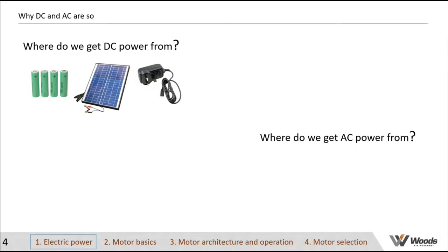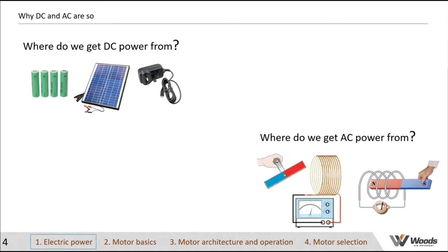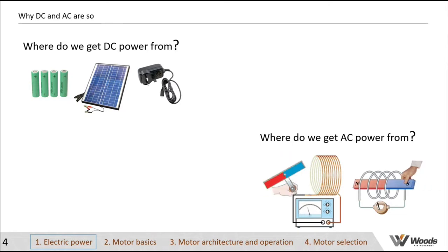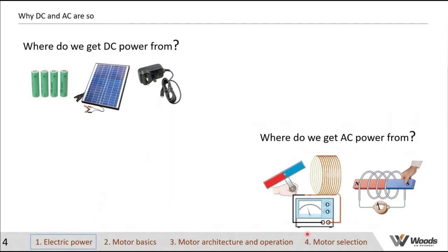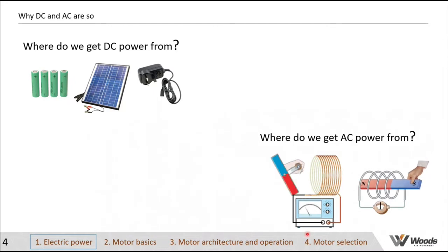Moving on to AC current — in its raw form we tend to get it from a moving magnetic field in a coil of wire. You can move the field linearly or rotate it. Rotating a magnetic field or moving it in and out of a coil of wire essentially creates AC power. When the magnetic field rotates one way, current flows in one direction, and as it goes the other way, current flows in the opposite direction — that is alternating current.